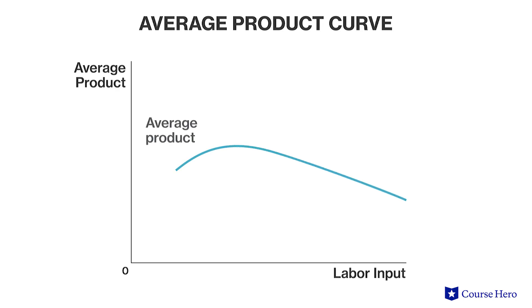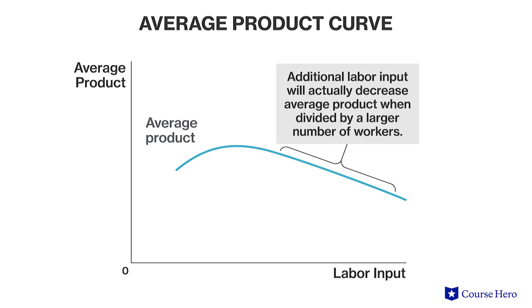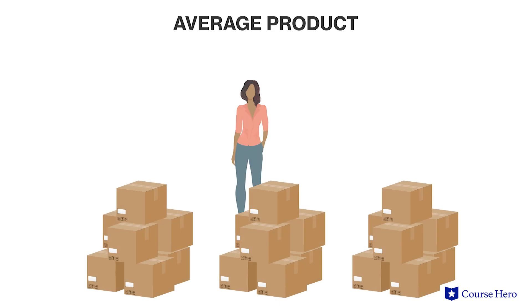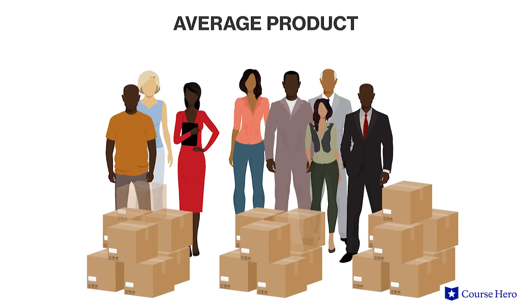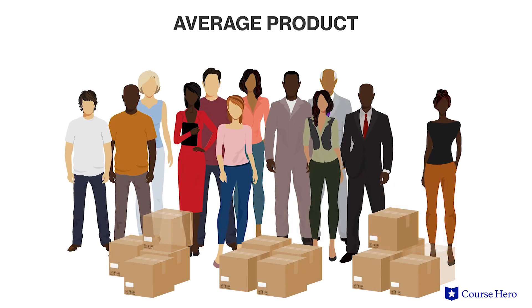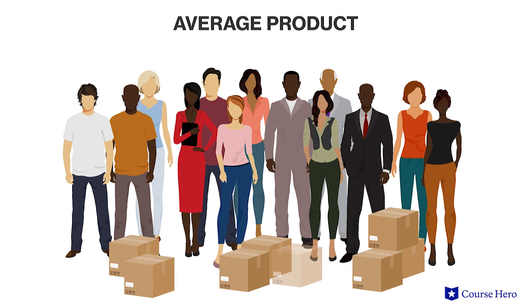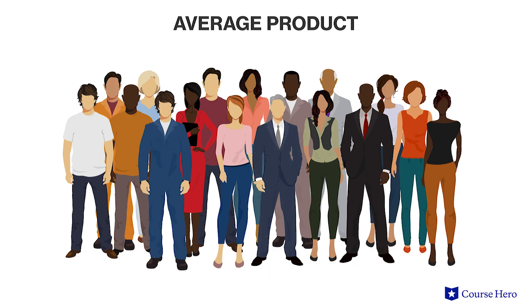Unlike the marginal product curve, the average product curve can never be negative, which means it will never cross the horizontal axis. While the slope can be negative because additional workers aren't adding much to the process, the total product can never be negative and the number of workers can never be negative. If a firm continued to place workers into a room until the point where absolutely nothing is accomplished, the average product would equal zero.